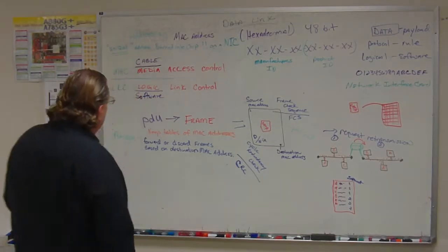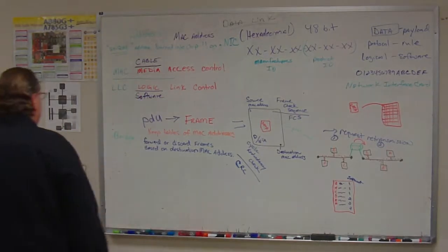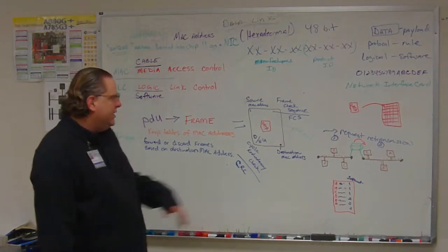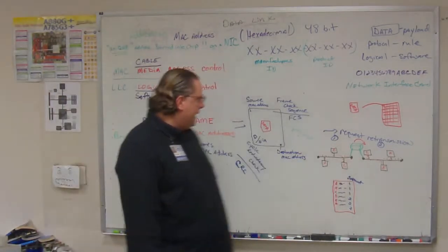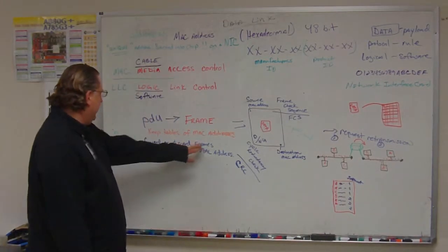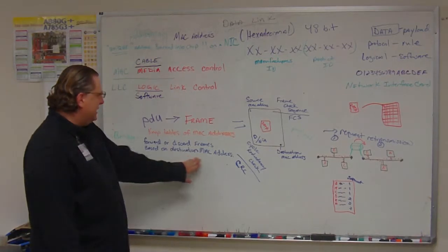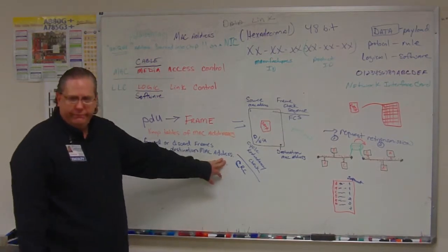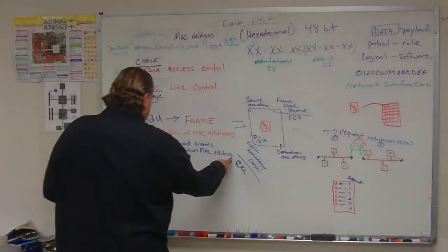Now, hardware that functions as a data link layer include a bridge. A bridge segments networks by forwarding or discarding frames based on destination MAC address. Alright, so that's where we are.